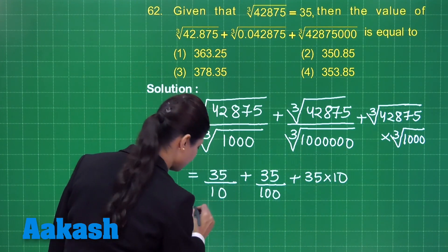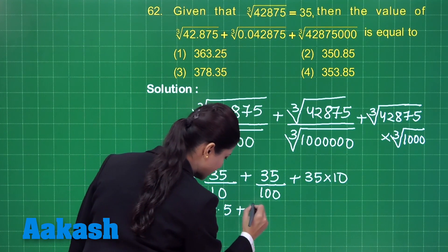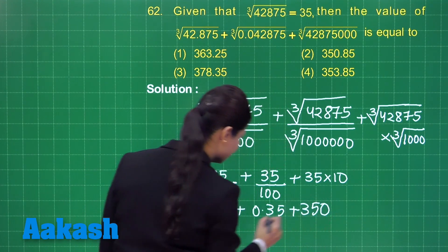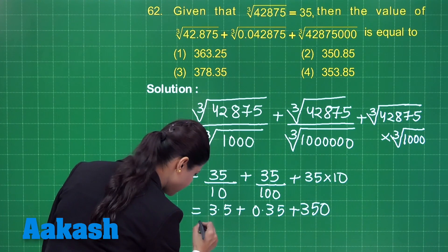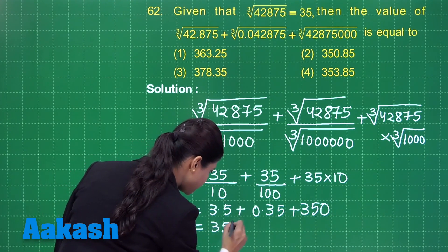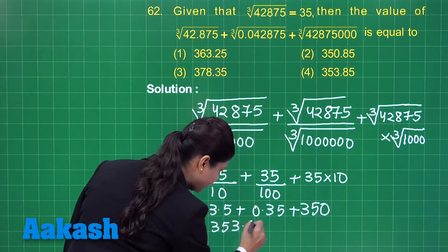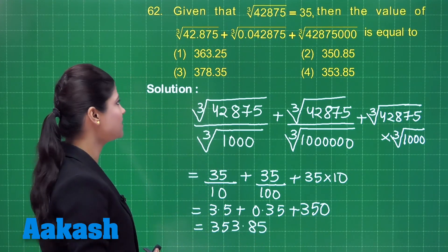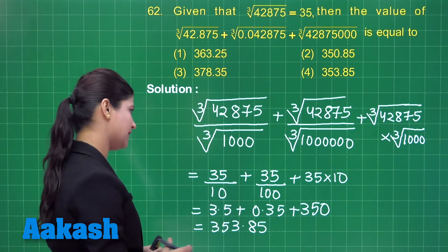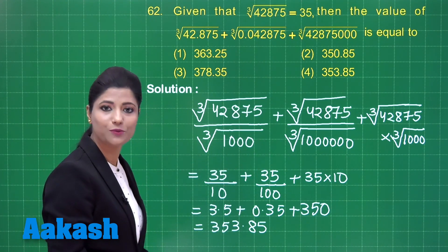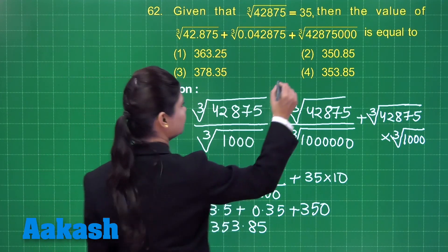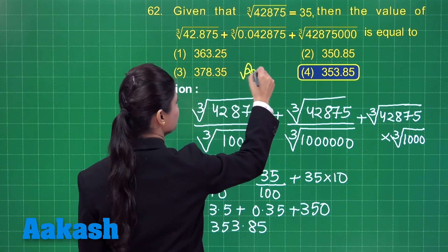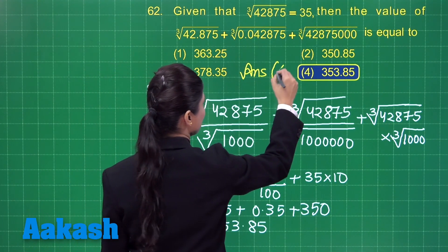So we have 3.5 plus 0.35 plus 350. When you add these three numbers you get the total as 353.85. This is the required answer for this question. The given expression equals 353.85, which is clearly found in option number 4. The answer for this question is option 4.